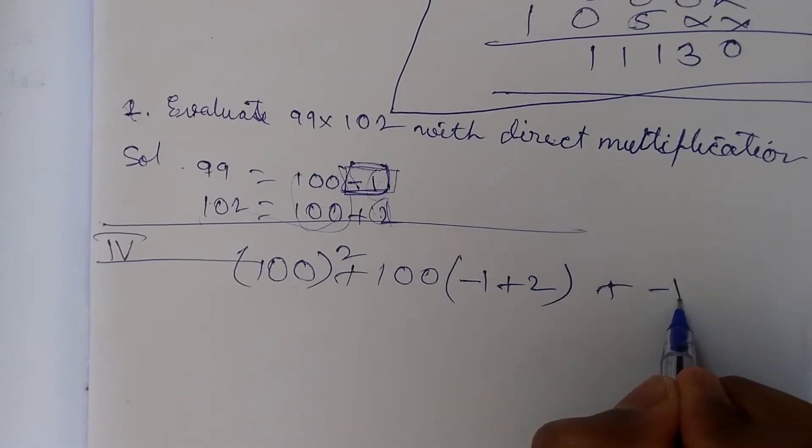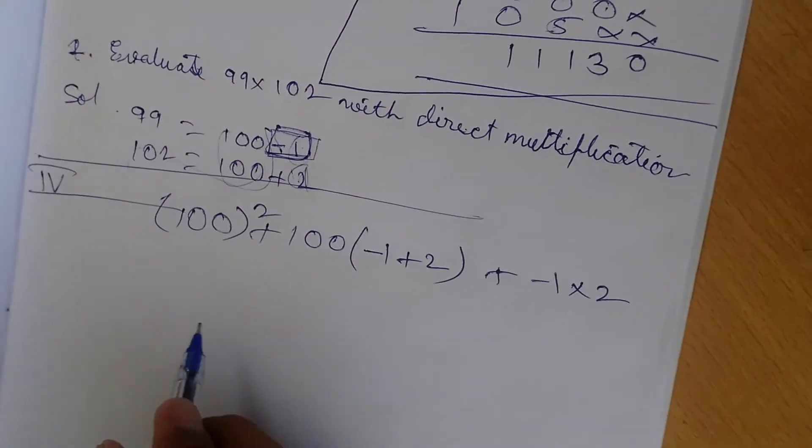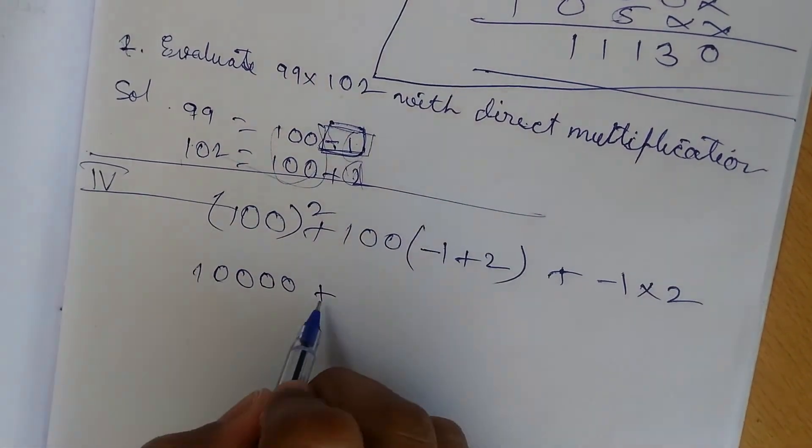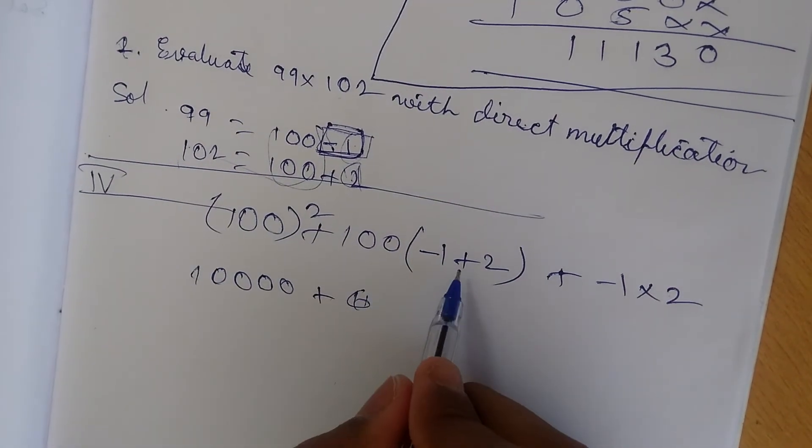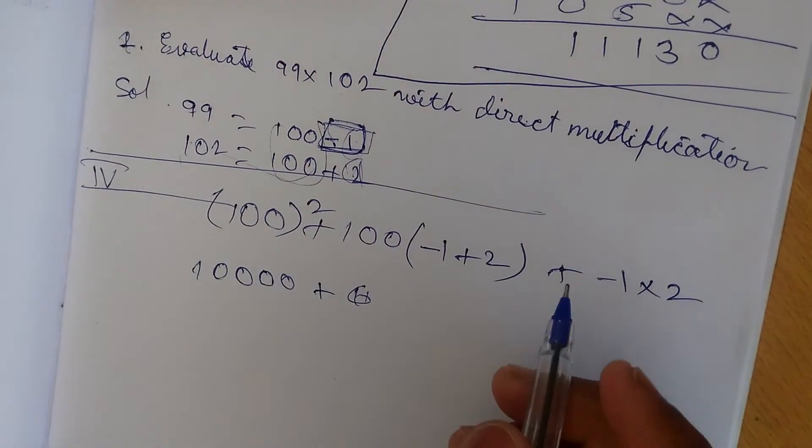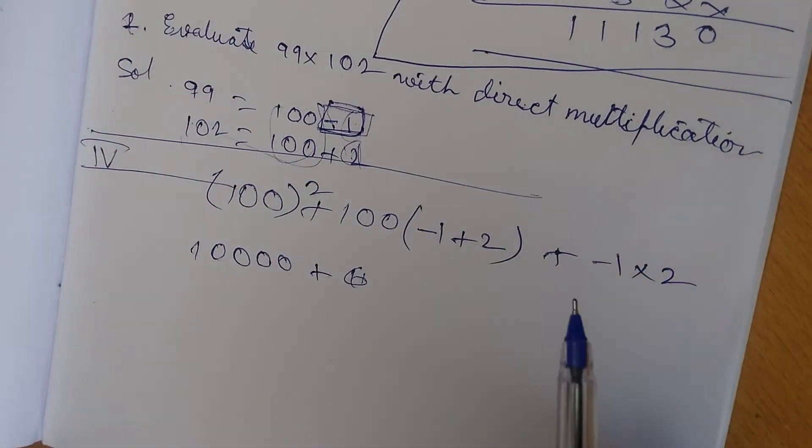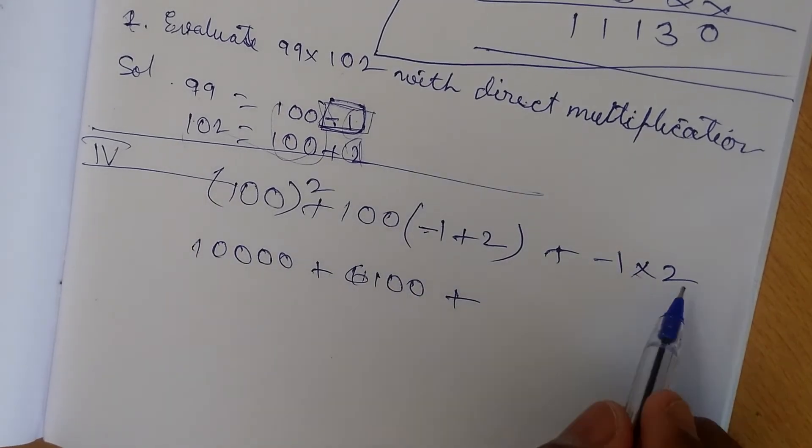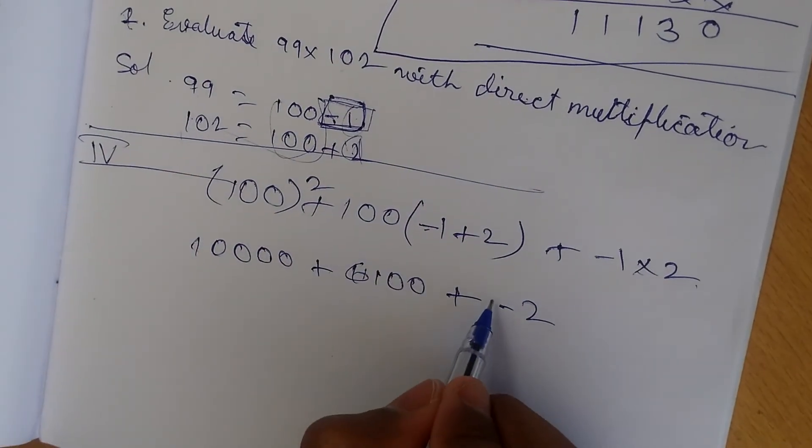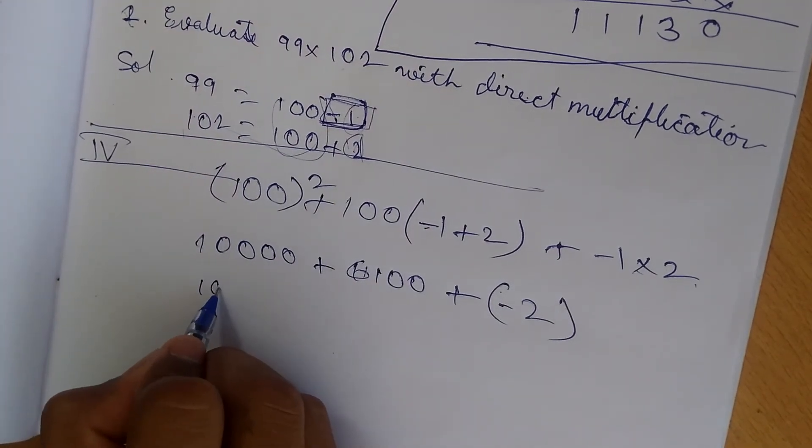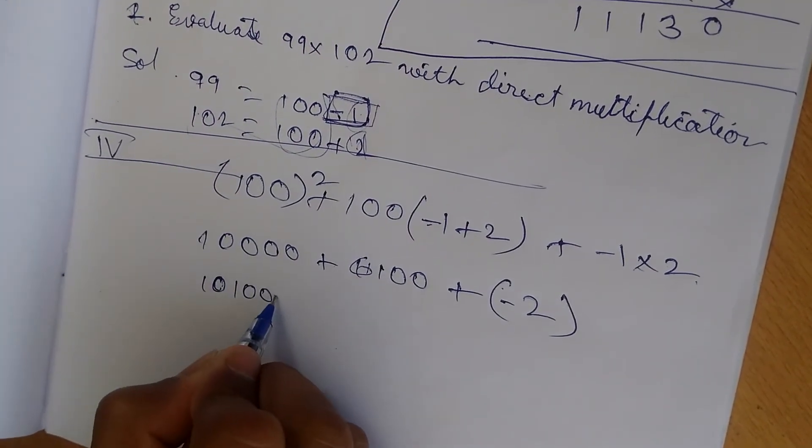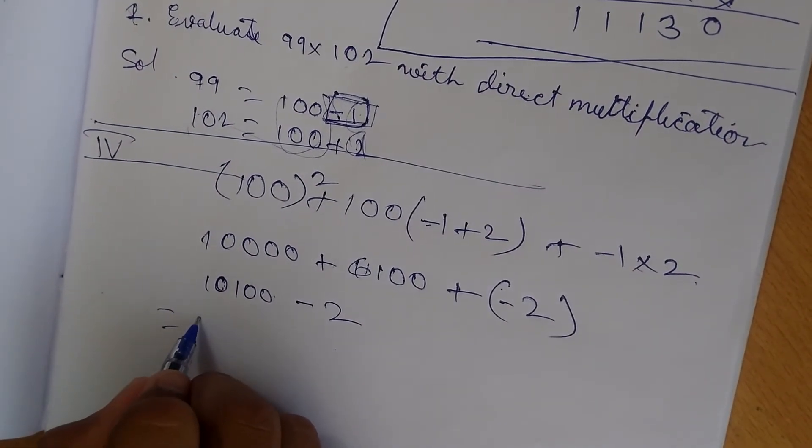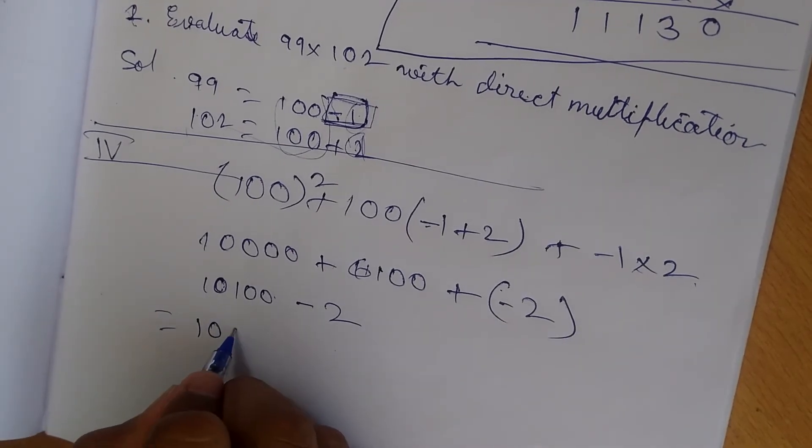Now it is 10000 plus - we are adding, so it is 1 and 1 into 100 equals 100 - plus now we are multiplying, so it is minus 2. So it is (1 + 1) into 100 minus 2, and now what is the answer? 10098.